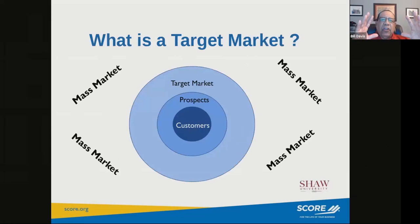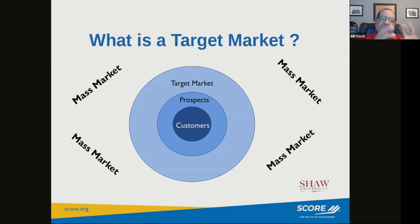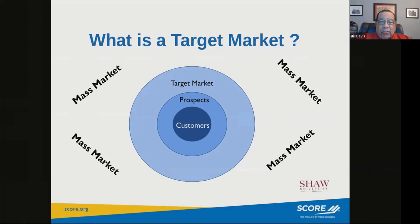The target market is who you want to do business with. Prospects are individuals or businesses that are considering whether to do business with you. Your customers or clients are the people you're actually delivering a product or service to. Oftentimes small business owners when getting started focus only on their current customers, which doesn't provide sufficient opportunity or give insight into who to focus on to convert them into customers.